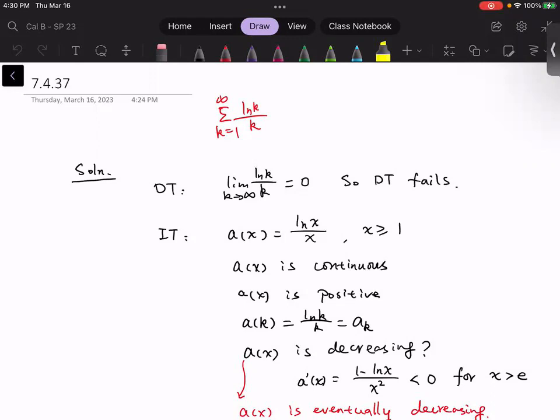Okay, so we will start with this one. The key is to evaluate the limit of the general term. Obviously, we could apply L'Hospital's rule to get the limit equal to zero. Then from the divergence test statement, this test will fail.